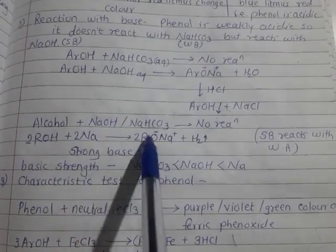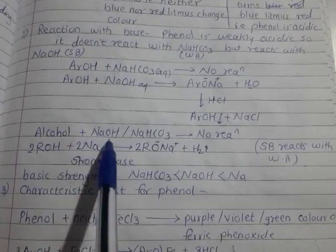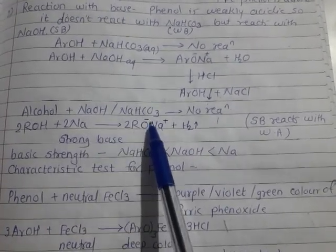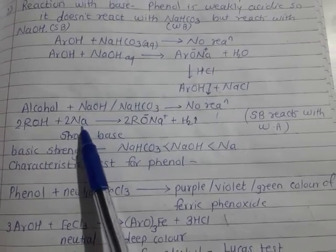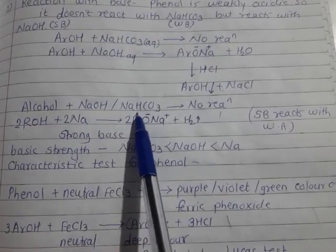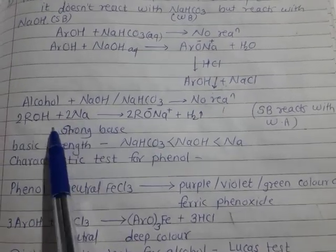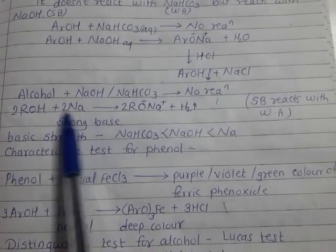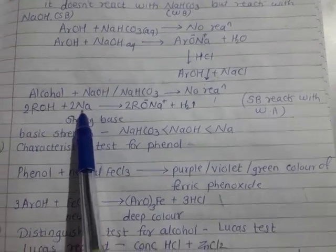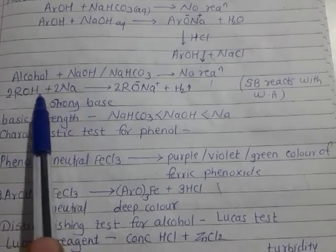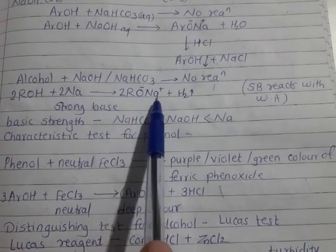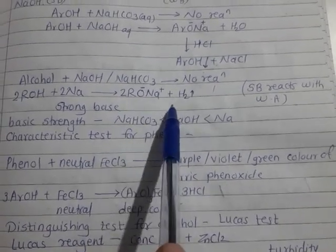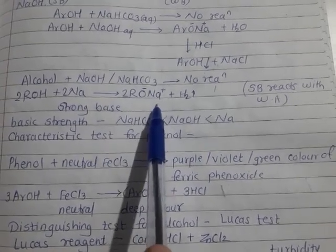For alcohol, NaOH and NaHCO₃ do not react with alcohol since it is neutral. However, Na metal or potassium metal is a stronger base than NaOH and NaHCO₃, so it does react with alcohol. The O-H bond breaks, Na takes the place of hydrogen, and we get RO⁻Na⁺ (sodium alkoxide) plus H₂ gas. Sodium alkoxide is used in Williamson synthesis for ether preparation.